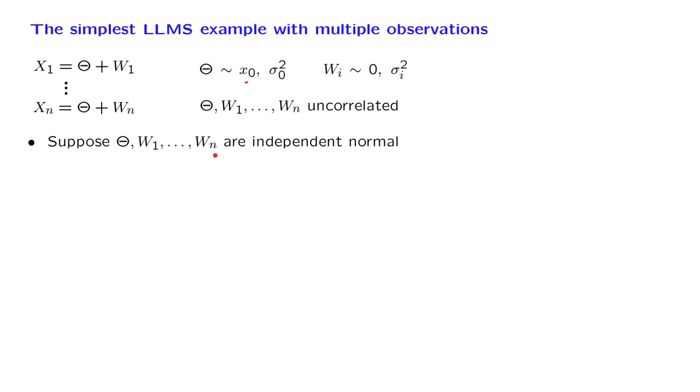This is a problem that we did study before. And we did find the maximum a posteriori probability estimate of theta. Because the posterior was normal, we found that this was also the conditional expectation estimator of theta. And we did find the formula for it, which took this form.